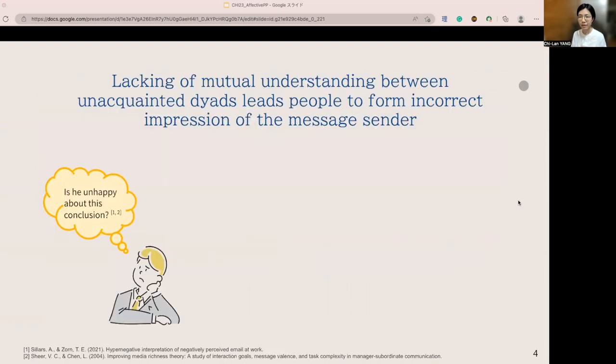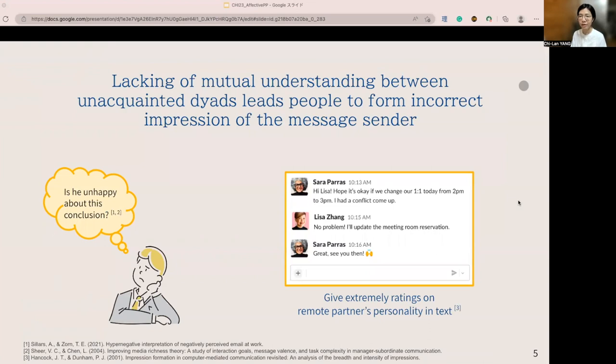When we interact with unacquainted persons using text, for example, exchanging messages with newcomers in the company, past studies have shown that the lack of mutual understanding and insufficient social-emotional cues will lead us to form incorrect impressions of the message sender and misinterpret the message. Especially when we communicate using only text, studies have shown that without hearing the partner's tone, people tended to give polarized ratings on their partner's personality but provided with little description.